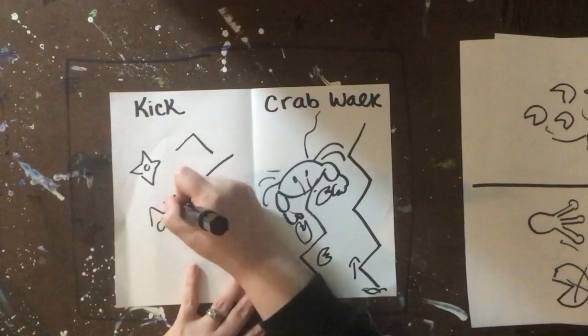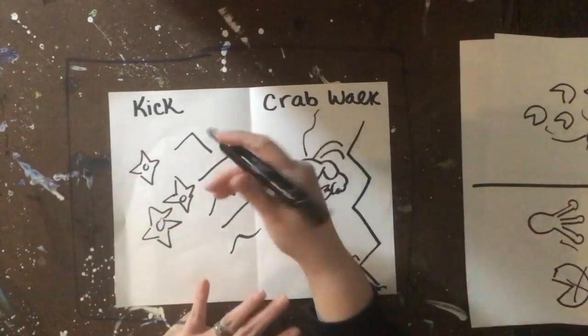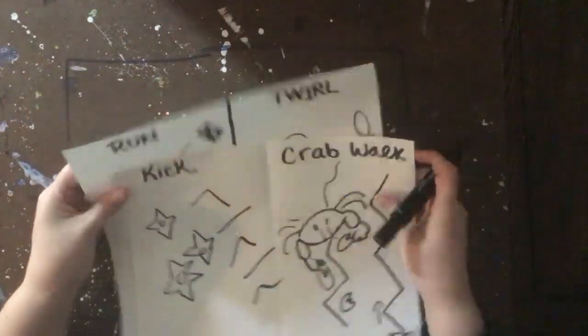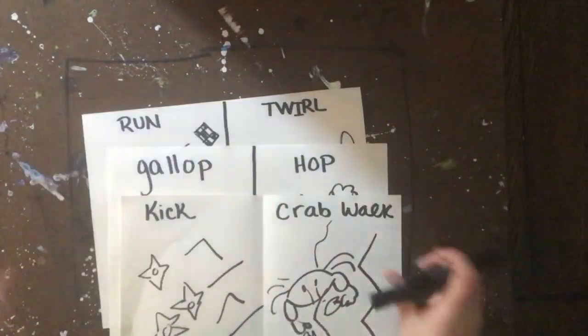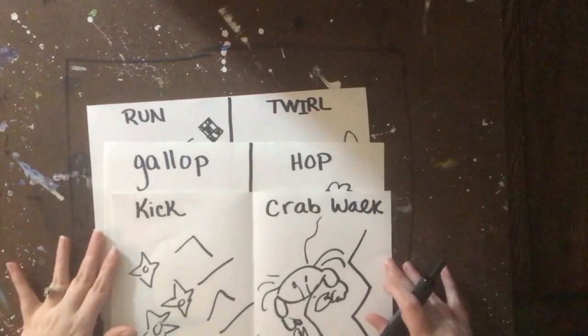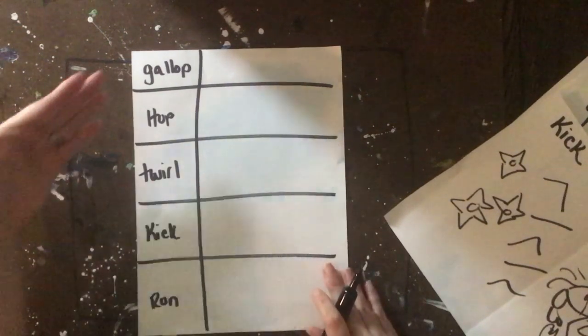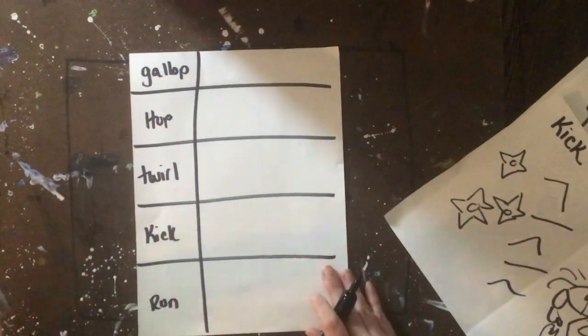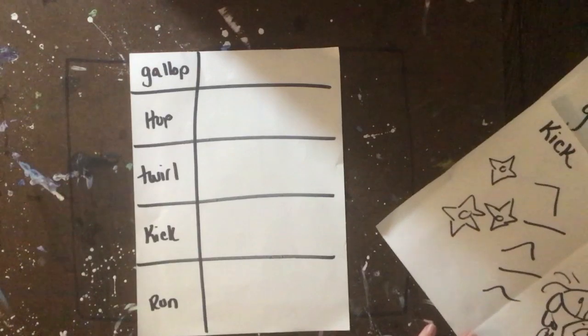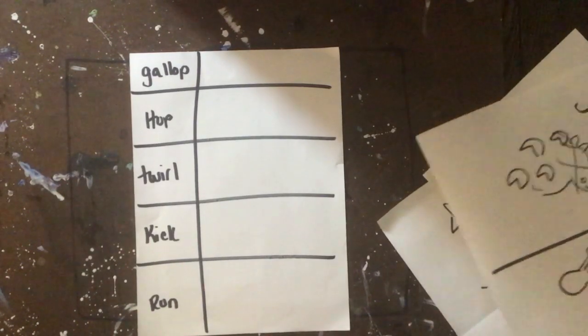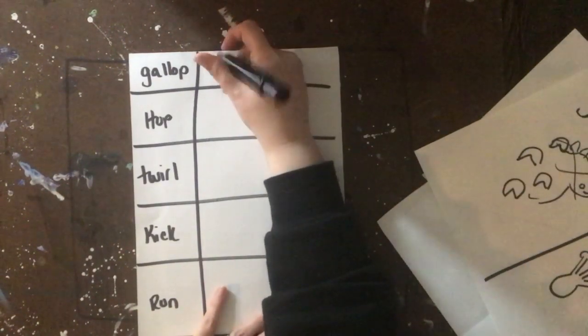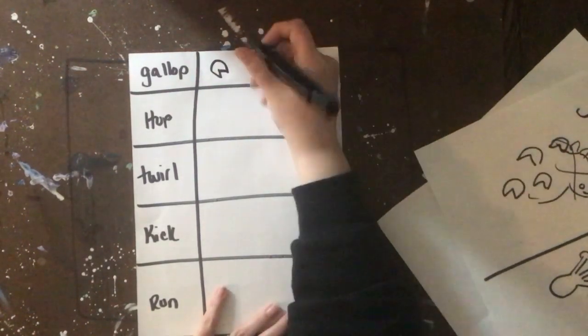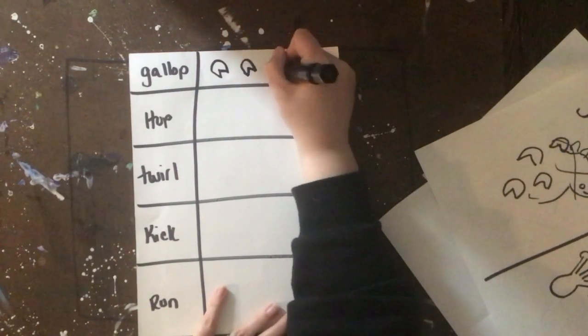When you combine all of these things together, you can get your movement path. So I'm going to look at my sketches, pick my favorite, and decide what order I want them to go in. I did six movements, but you really only need to have five in your final path. So I picked the five I like the most: gallop, hop, twirl, kick, and run. For my gallop, I'm going to do those horse hooves — I can draw a path where my horse hooves go.